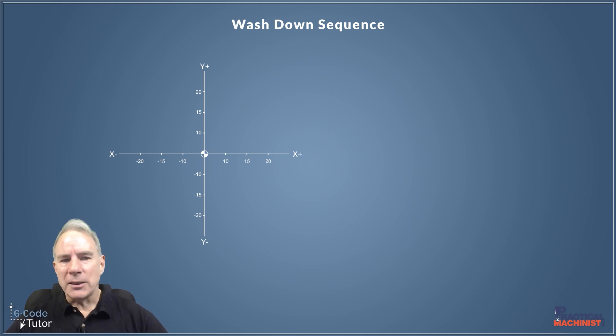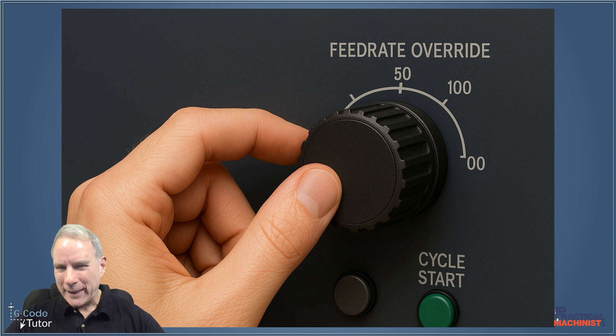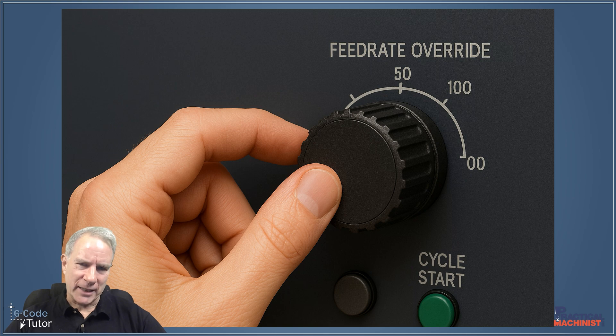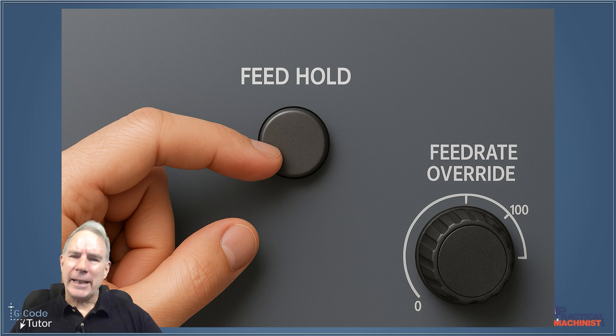So to do that we need to have our hands on that rapid control override knob and we need to have this as low as possible. We want everything to be moving slowly the first time we run this and you might also want to keep your finger on the feed hold button just in case.